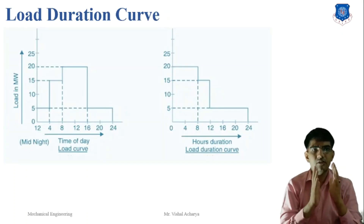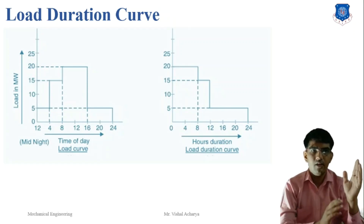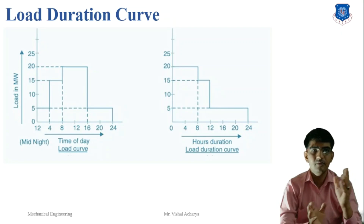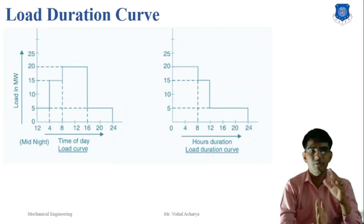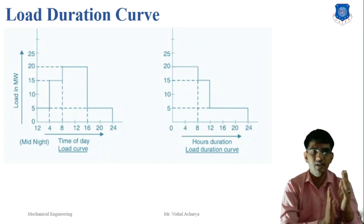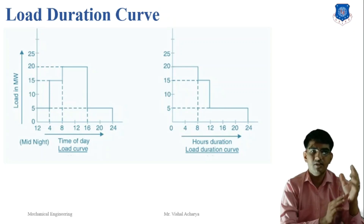The load duration curve is defined as the curve between load and time, in which the ordinate represents the load plotted in order of decreasing magnitude — with the greatest load at the left, lesser load toward the right, and the lowest load at the extreme right. To plot the load duration curve: first, present the load curve; second, note the total time duration during which each load occurs; and last, plot the load against the time during which it occurs.